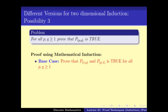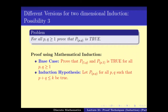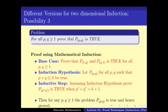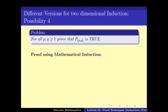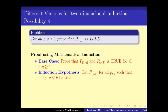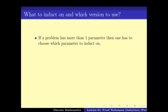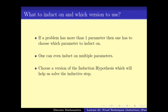We can also induct on p+q — that means if p+q ≤ k is true, and if we can prove that for all p', q' where p'+q' = k+1 the statement is true, then we have the whole problem. One more example is to induct on the minimum of p and q. It is clear that there are quite a number of versions, and all you have to do is set up the induction hypothesis to prove the inductive step and ensure that all cases are covered.